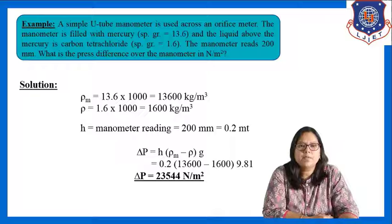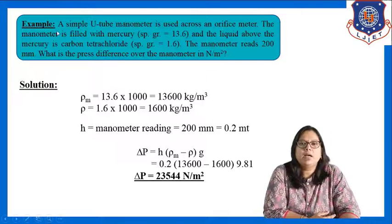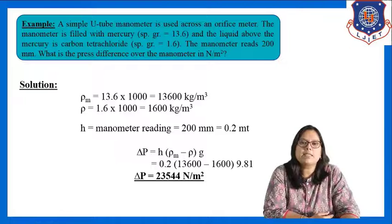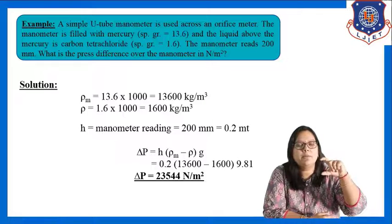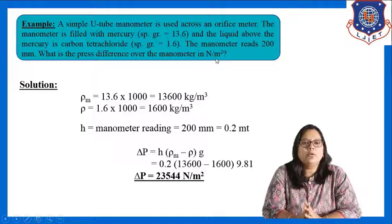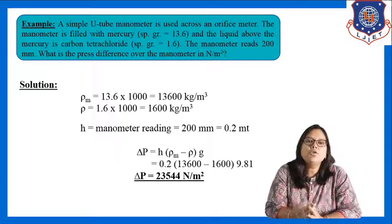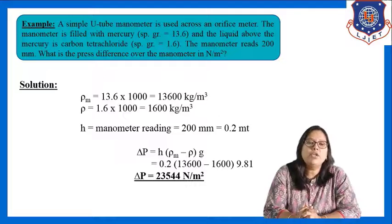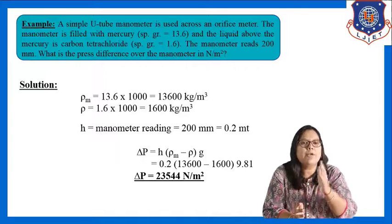Now let us take one example. A simple U-tube manometer is used across an orifice meter. The manometer is filled with mercury having specific gravity 13.6, and the liquid above the mercury is carbon tetrachloride (the process fluid) having specific gravity 1.6. The manometer reads 200 mm. What is the pressure difference in Newton per meter square? We directly use the equation: ΔP = h·(rho_m − rho)·g.